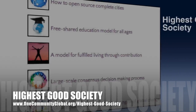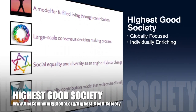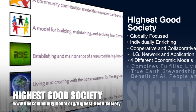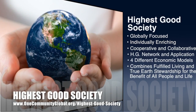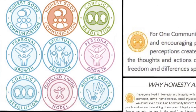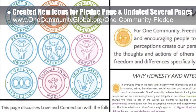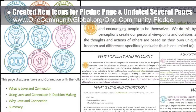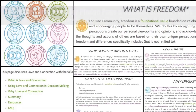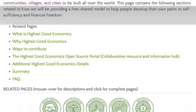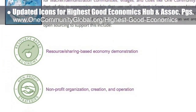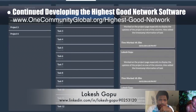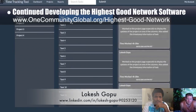OneCommunity's approach to highest good society is globally focused, individually enriching, cooperative and collaborative, includes a highest good network and application, four different economic models, and combines fulfilled living and true earth stewardship for the benefit of all people and all life on this planet. This last week the core team created new icons for the pledge page and updated formatting for the associated values pages — covering love and connection, honesty and integrity, fulfilled living, freedom, diversity, contribution, consensus decision making, and community and communication. We also updated all icons for the highest good economics open source hub. Lokesh Gopu, software engineer, continued developing the highest good network software, working on the task management component.